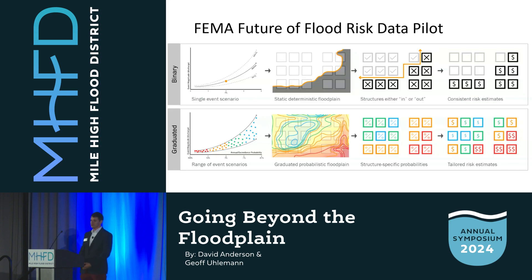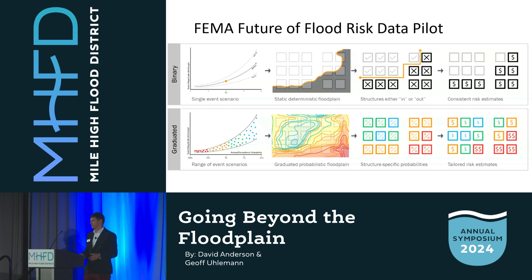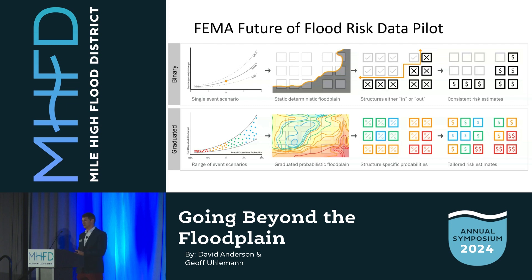This dovetails nicely with FEMA's approach to the future of flood risk data. FEMA is moving away from a binary in/out approach into a more graduated risk. The top graphic shows X's marking flooded buildings and everything else as not flooded, whereas below shows a more graduated approach — a percent risk given at one of those structures — providing a better picture for a wider variety of events rather than just the 100-year. This ties back to our Rain-on-Mesh modeling approach. FEMA is currently piloting three watersheds and looking to expand Rain-on-Mesh modeling after developing standards to the rest of the nation over the next 10 to 15 years.